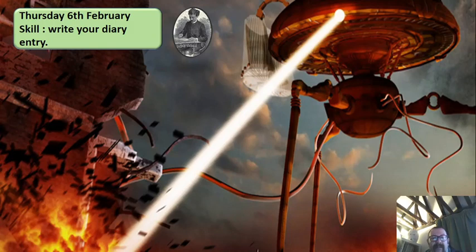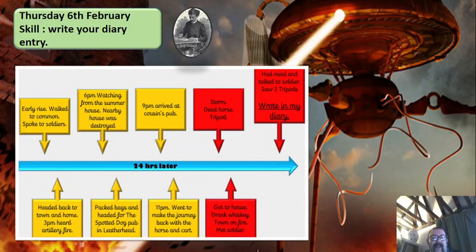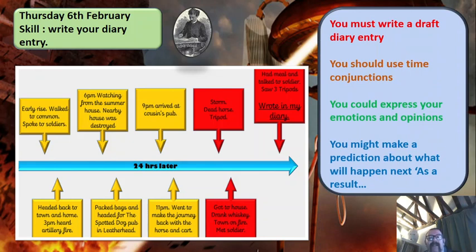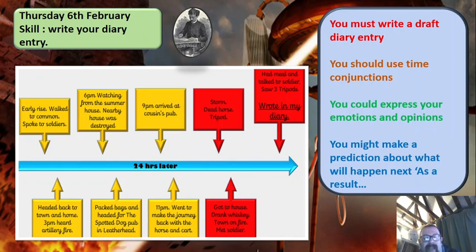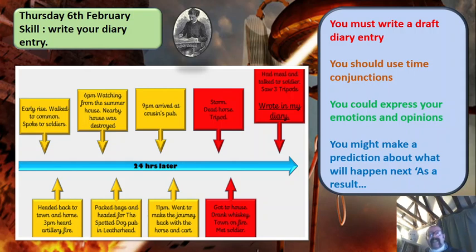So let's just finish with a final thought. There's your timeline — that's really what you want to focus on for structure. We'll read through our musts and our mights. So you must write a draft diary entry. You should use time conjunctions. You could express your emotions and opinions. I used a rhetorical question at the end of mine. You might make a prediction about what will happen next. Really enjoy your writing today, guys. It's Thursday. Keep safe. Have a great day in the bubble. Cheerio!